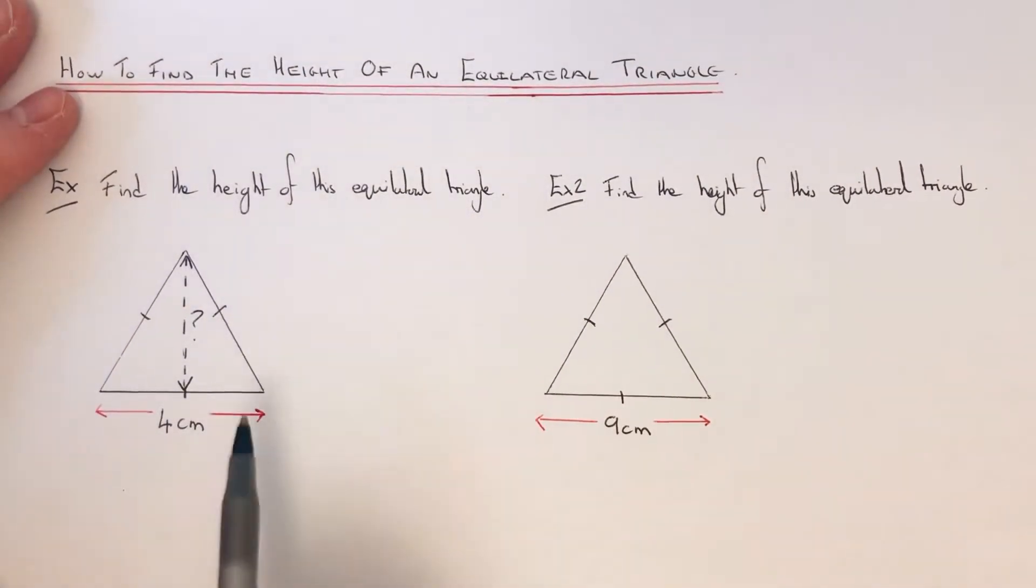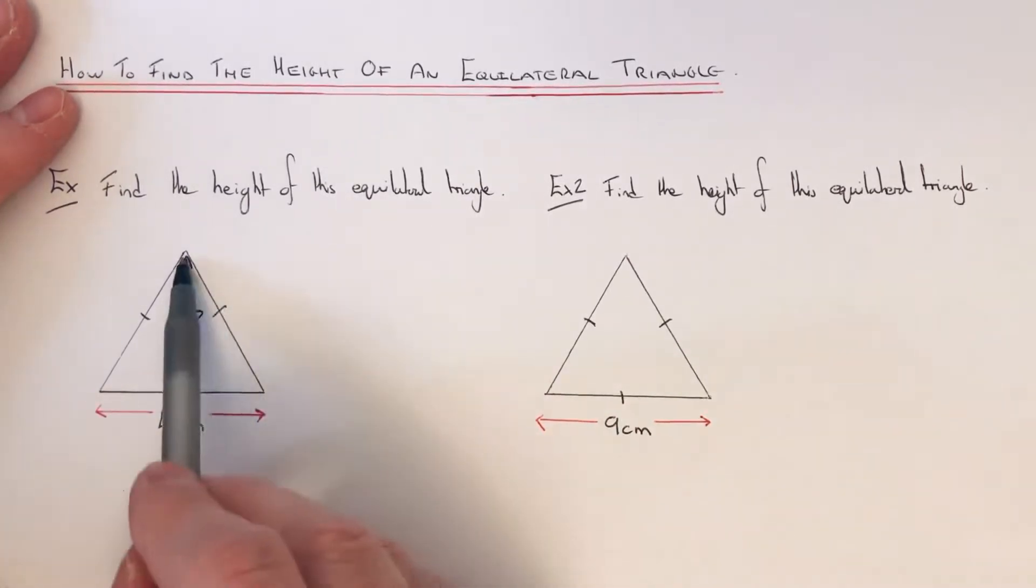So what you need to do then is draw out a right angle triangle and use Pythagoras to find the height. Okay, so I'm just going to copy out this right angle triangle here again.